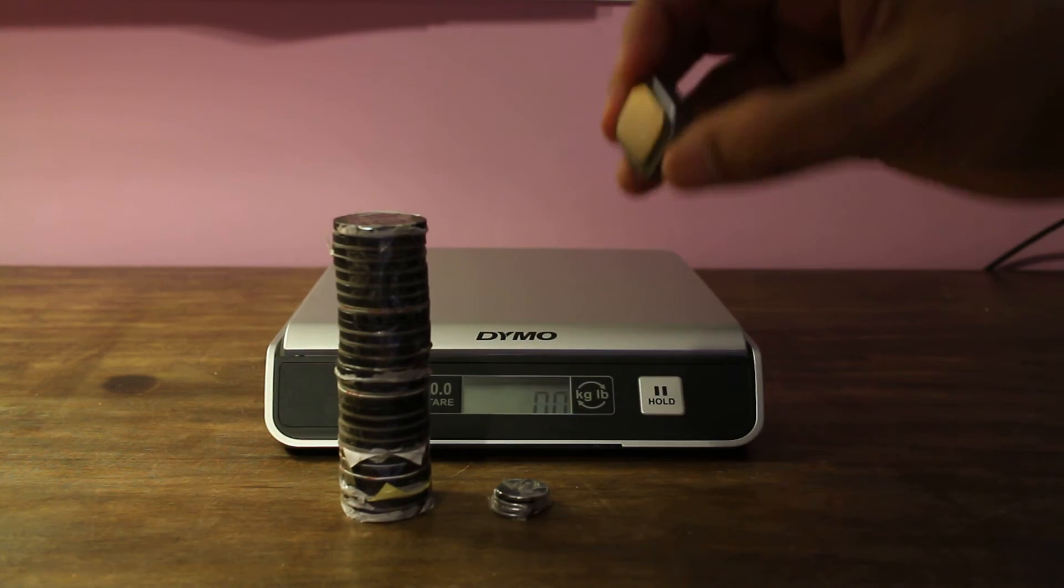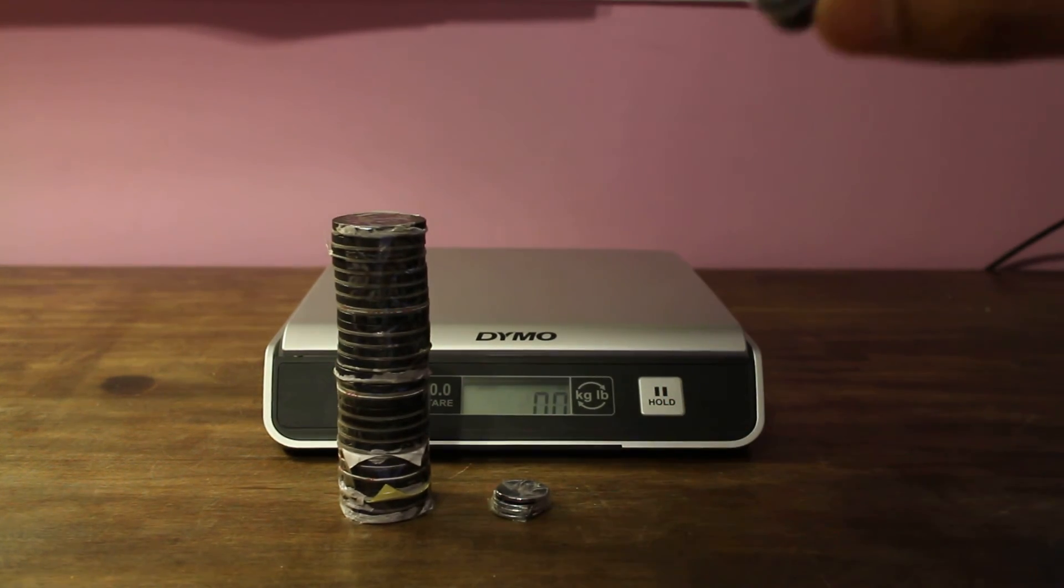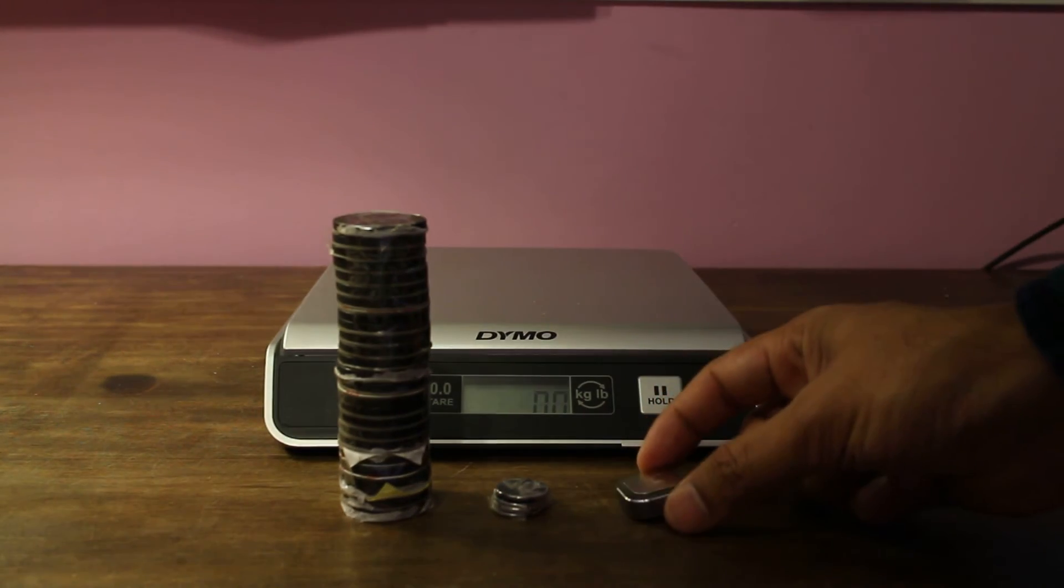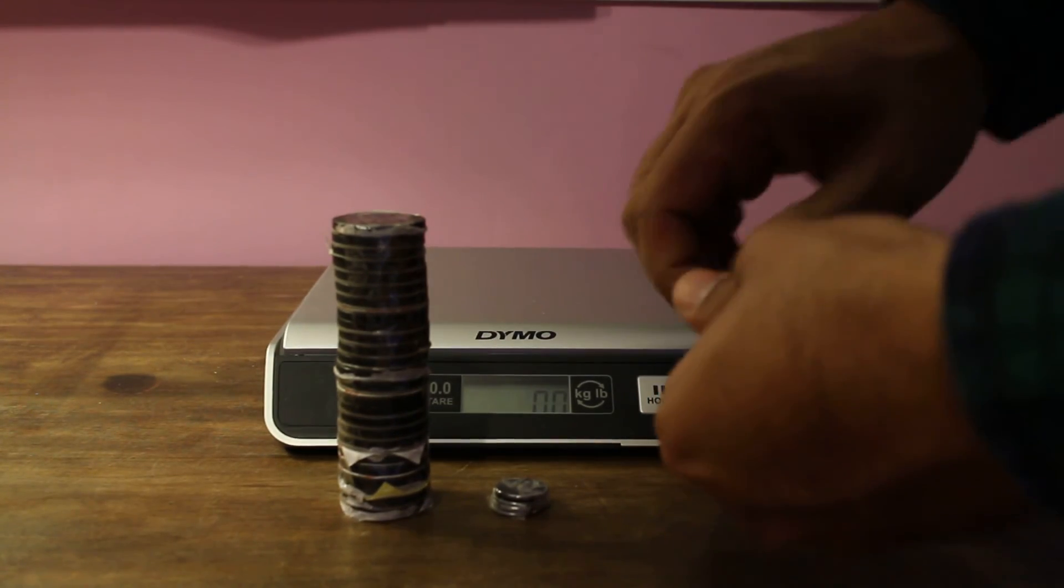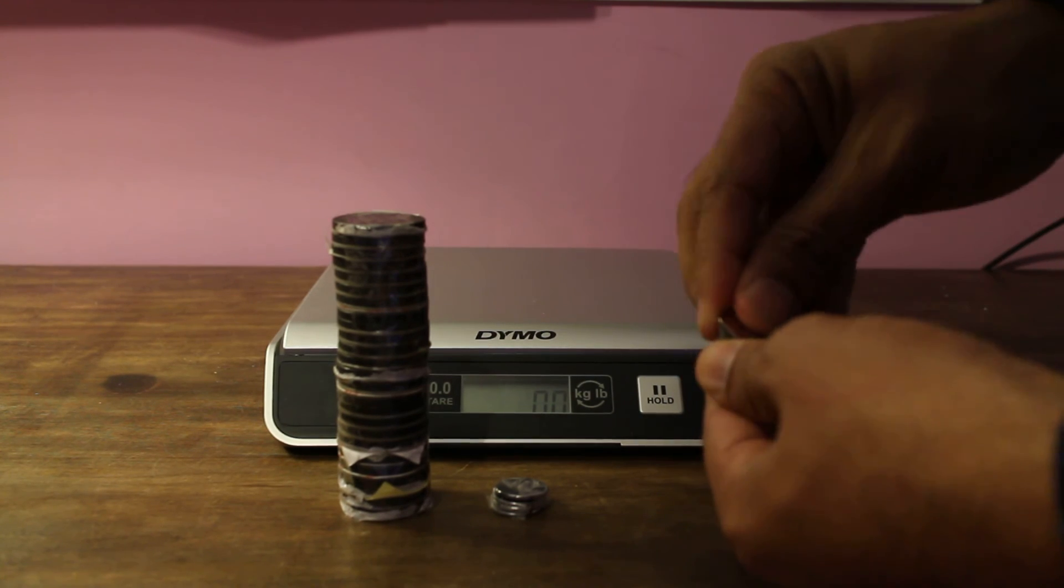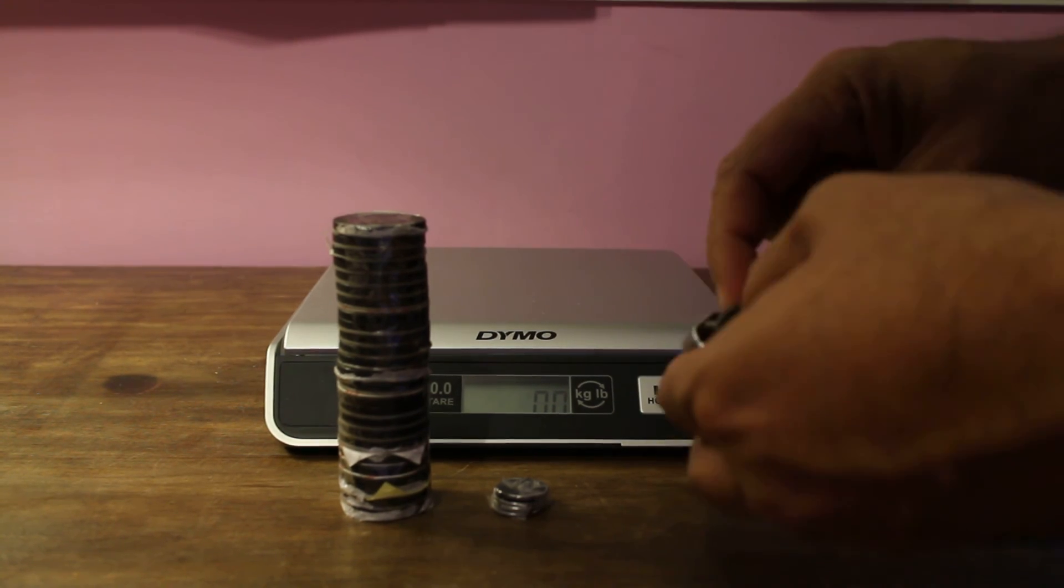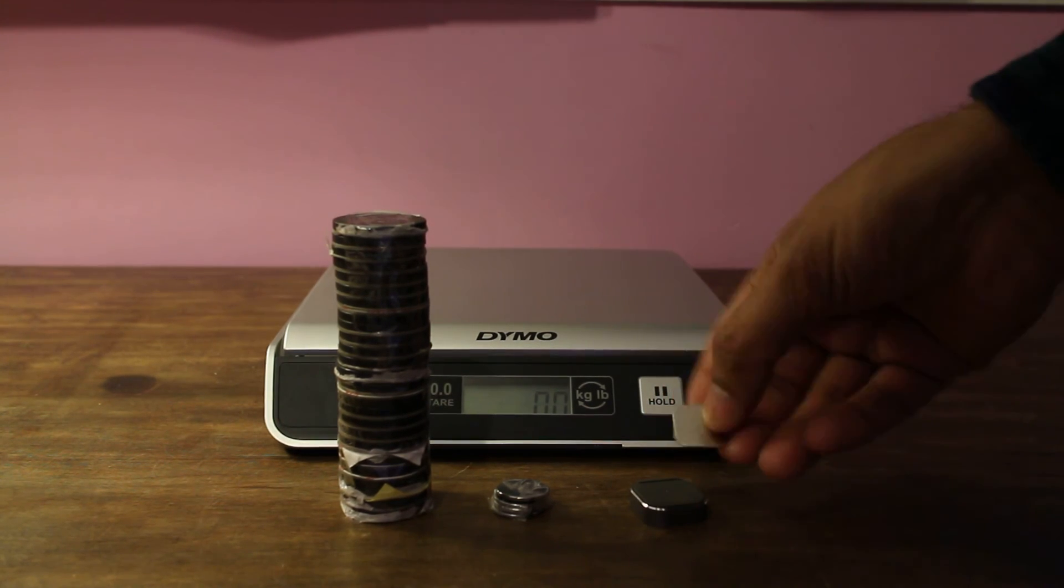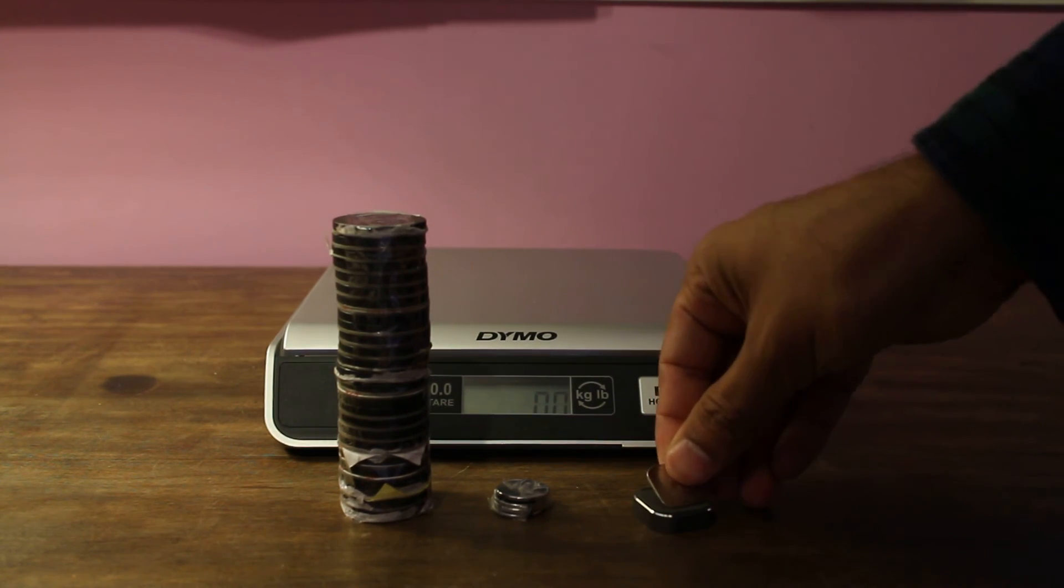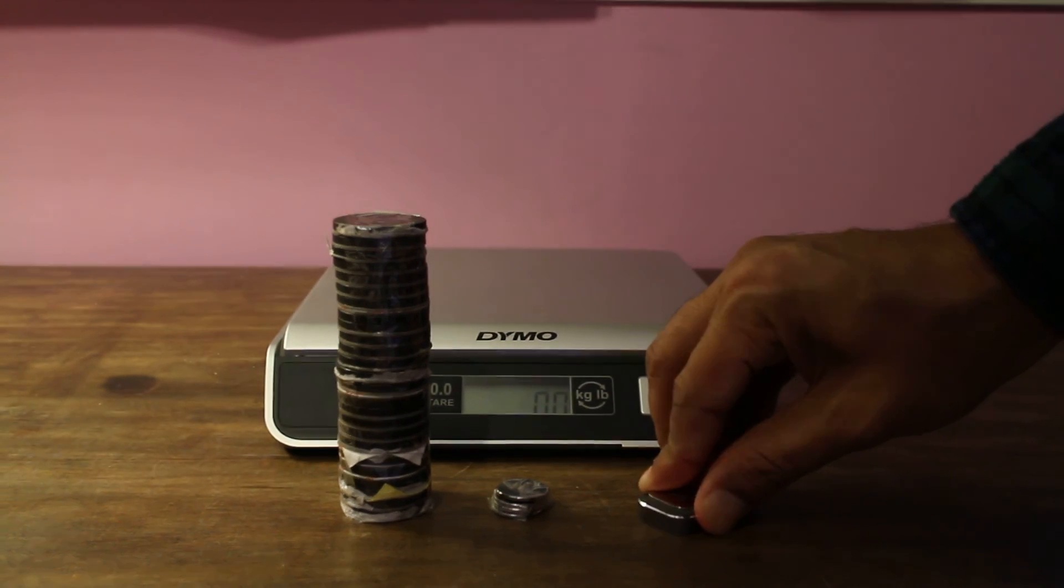So as you can see, the magnetic shielding works really amazing. It can hold a pound without the disc, and then with the disc it can't even hold 0.4 of an ounce of weight. That shows the magnetic shielding of it. So it will protect your phone and your devices.